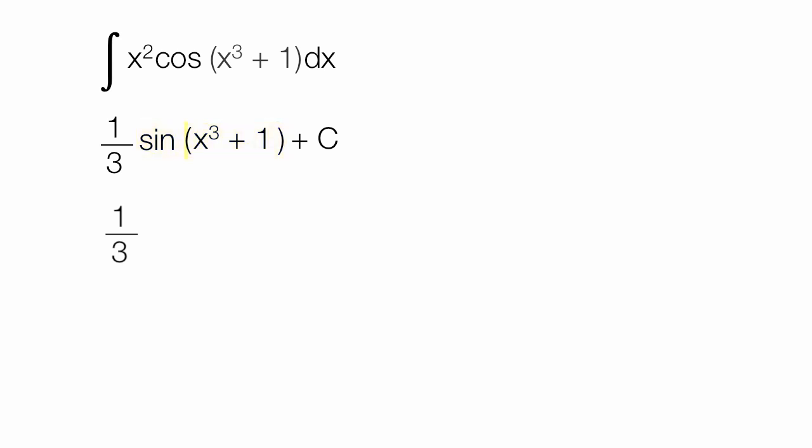The derivative of sine x-cubed plus 1 is cosine x-cubed plus 1. The derivative of the inside is 3x-squared. The derivative of 1 is nothing, it's 0, and the derivative of a constant is also nothing. The 3s cancel out.